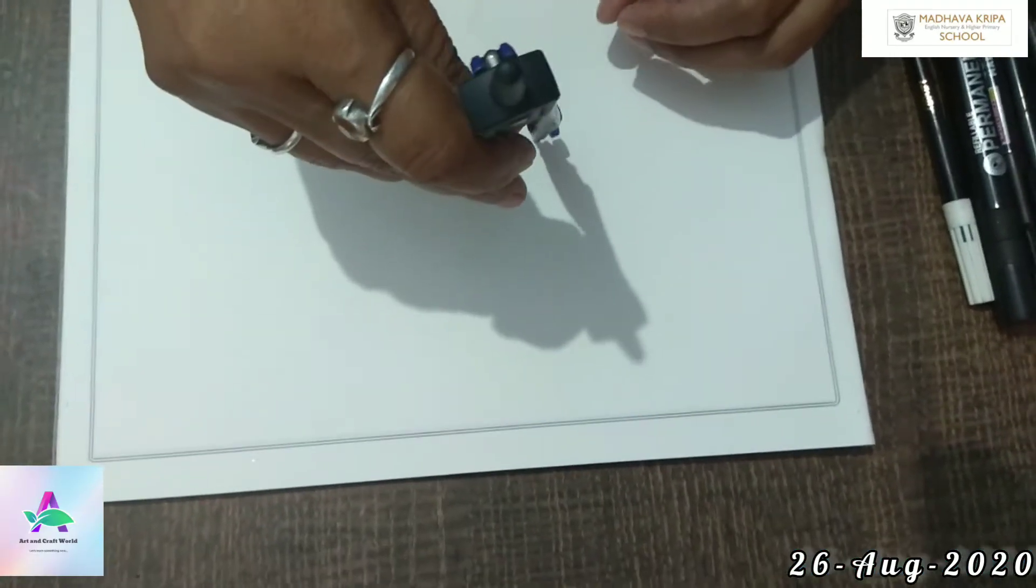Good morning children. Today let's do a new art form, doodle art. You require very minimum items: a compass, sketch pens that you have at home, a black gel pen, marker pen, and one thick marker pen.